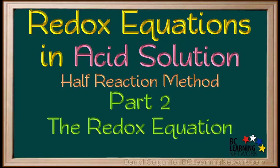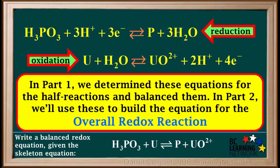Here, we'll use the half-reactions we balanced in the previous video, Part 1, to build an equation for the overall redox reaction taking place, and we'll balance it in acid solution. In Part 1, we determined these equations for the half-reactions and balanced them. In this video, Part 2, we'll use these to build the equation for the overall redox reaction.